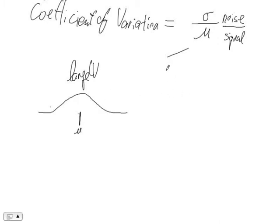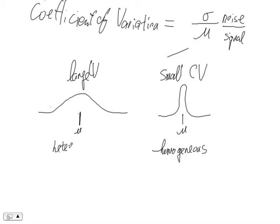And we have a small coefficient of variation, and that distribution will be much sharper. That's the mean value here. So for the system with small CV, which means there is less noise in the system and the system therefore is more homogeneous. Large CV means a lot of noise. The system is heterogeneous.